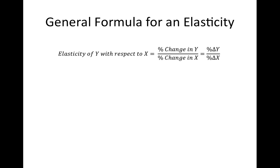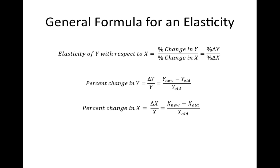In general, the formula for the elasticity of Y with respect to X is simply the percentage change in Y divided by the percentage change in X. To calculate the percent change in a variable, divide the change in a variable by its original value. If we plug the formula for the percent changes in Y and X into the elasticity equation and rearrange, we find that the elasticity is just the change in Y divided by the change in X times the ratio of the original values of X and Y. This interpretation of the formula turns out to be very useful.